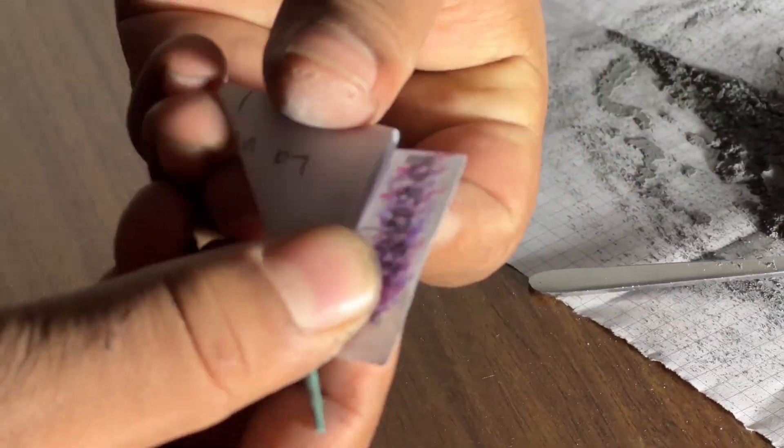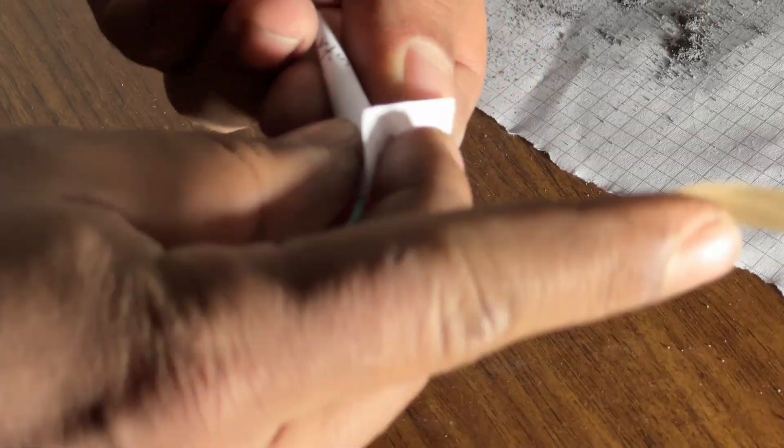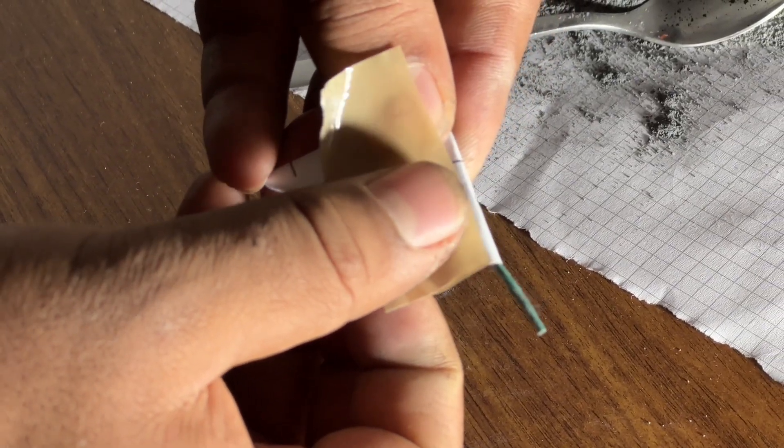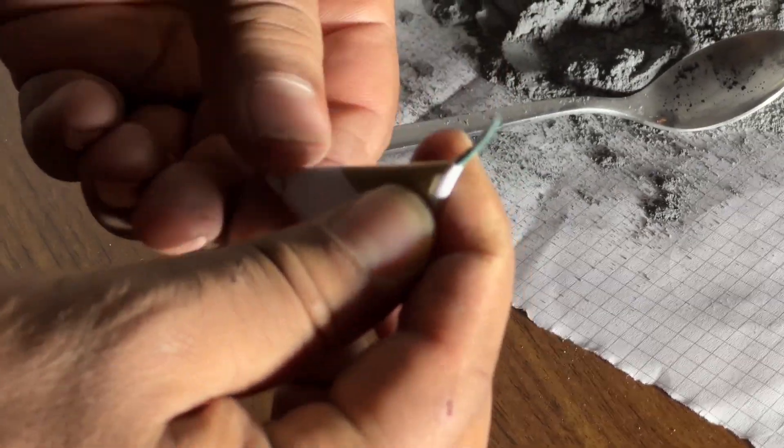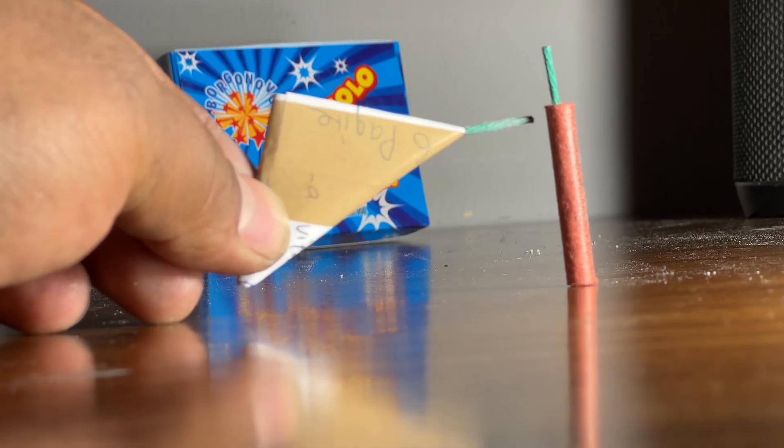You can choose whether to apply a little bit of glue or, as in this case, a little bit of tape. Here's a comparison between a commercial firecracker and mine.